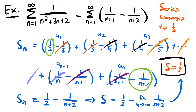That is our final answer. Sometimes you might come across a series that initially doesn't seem to be a telescoping series. But if you recognize that it can be broken up by using partial fraction decomposition, you can take a second look and see if you have a telescoping series. If you do, you can use the nth partial sum to determine convergence and find the sum. That's all for this lesson on telescoping series. Check out the examples video linked at the end for more examples, and feel free to leave questions in the comments.